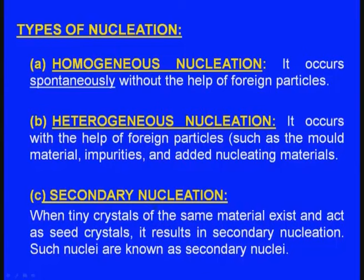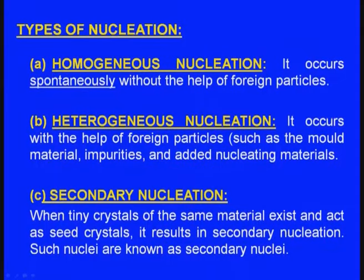These impurities act as foreign particles and nucleating agents — this is heterogeneous nucleation. The third type is secondary nucleation: when tiny crystals of the same material exist and act as seed crystals, it results in secondary nucleation, and such nuclei are known as secondary nuclei. So there are three types: homogeneous, heterogeneous, and secondary nucleation. In castings, heterogeneous nucleation generally dominates.